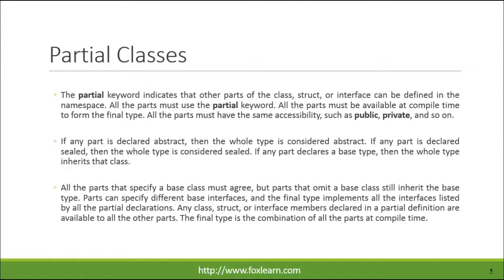All the parts that specify a base class must agree, but parts that omit a base class still inherit the base type. Parts can specify different base interfaces, and the final type implements all the interfaces listed by all the partial declarations. Any class, struct, or interface members declared in a partial definition are available to all the other parts. The final type is the combination of all the parts at compile time.